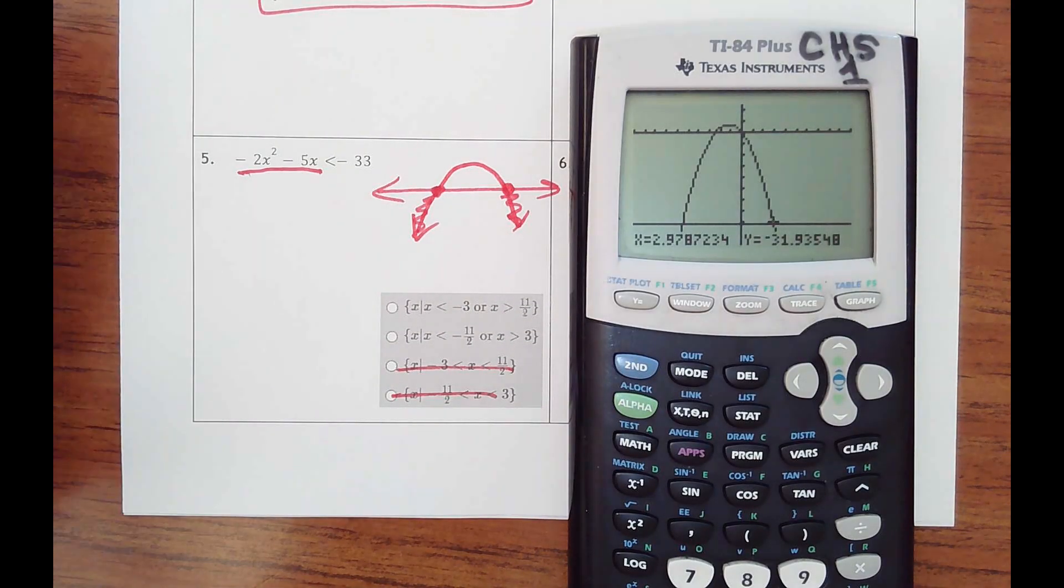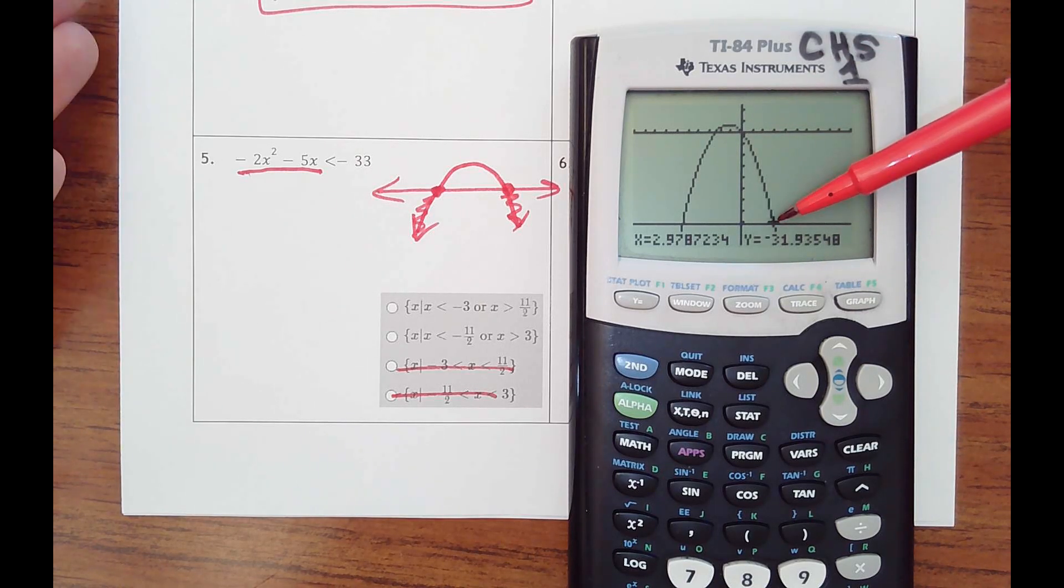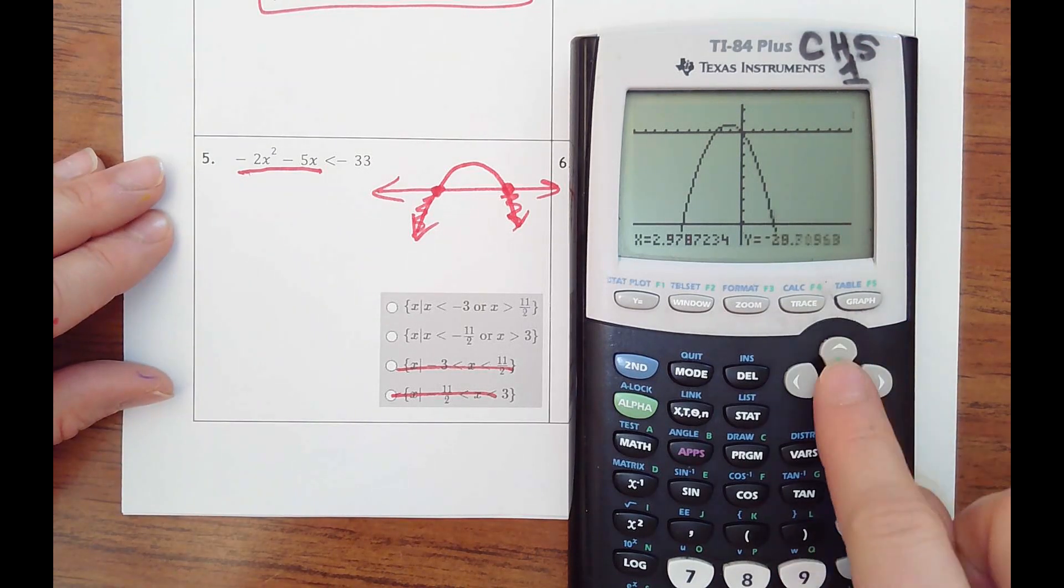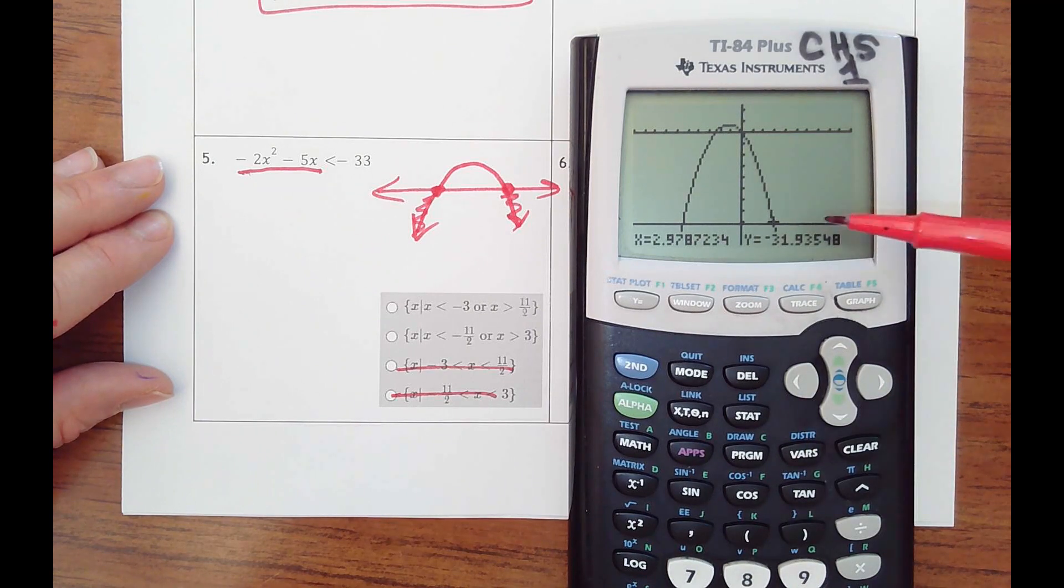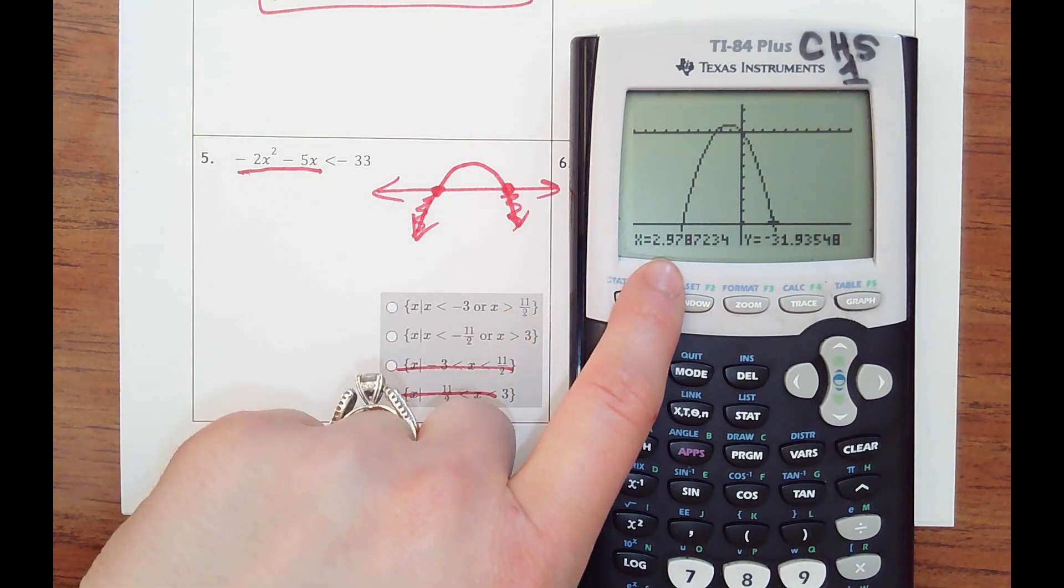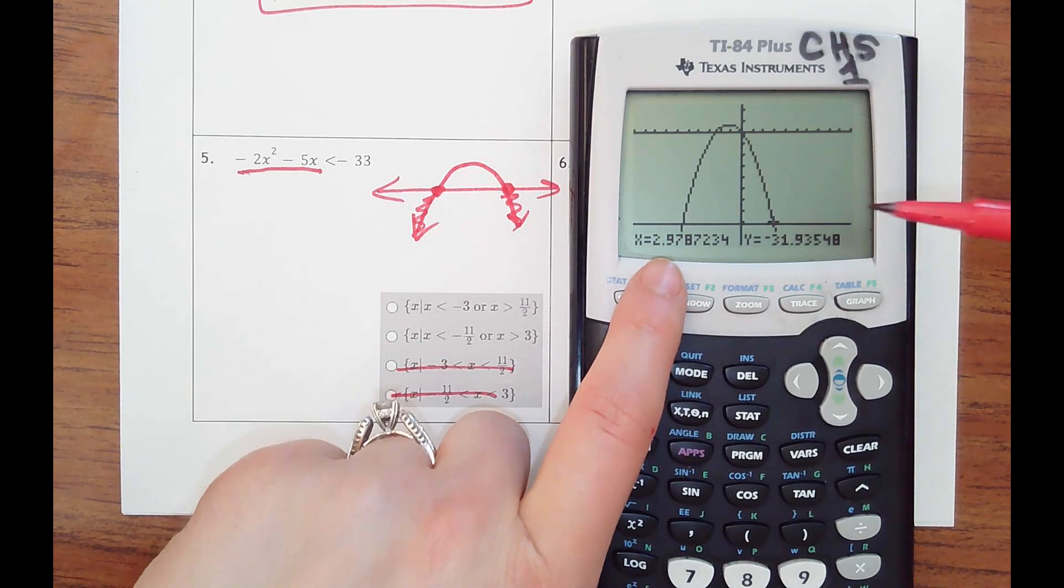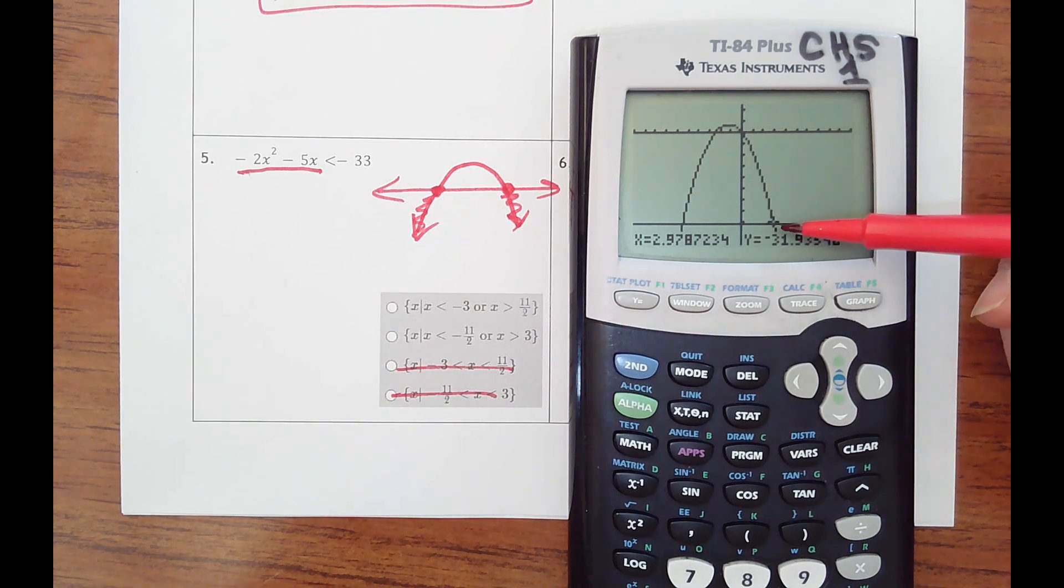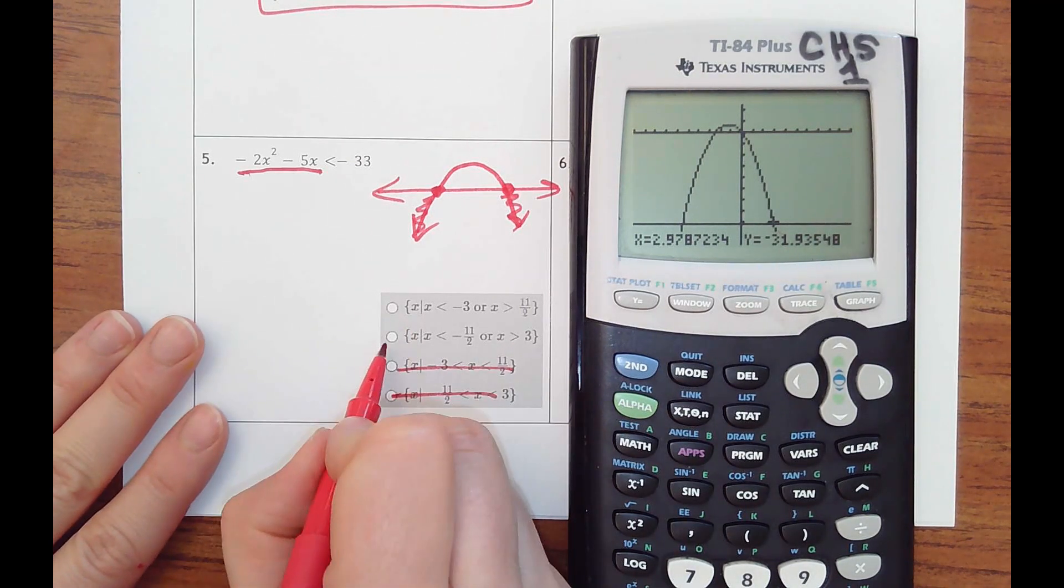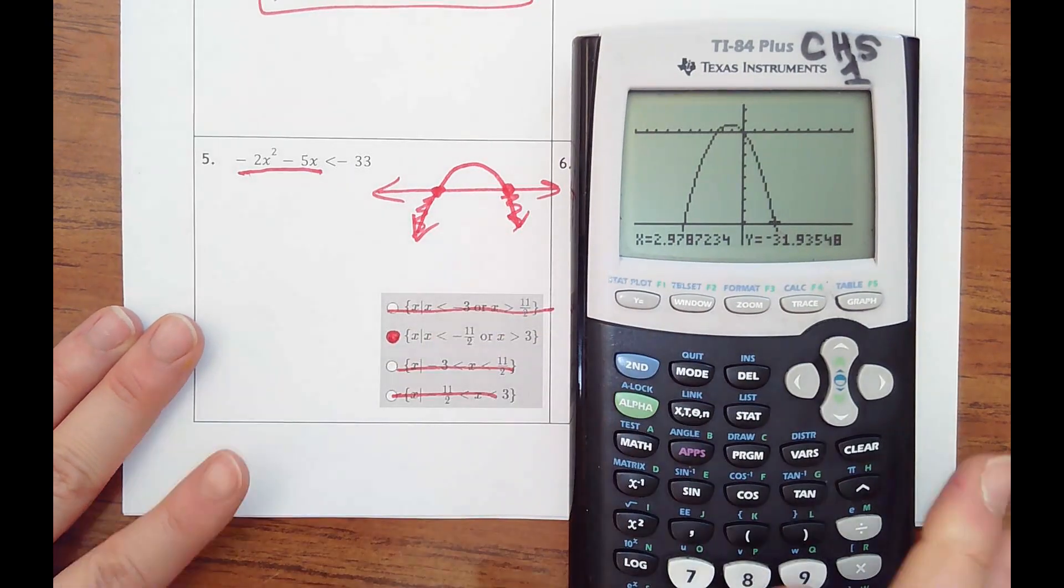And the good thing is, since this is multiple choice, I could graph them both and just see where that's at. I just arrowed this thing kind of close to where this point of intersection is, and I'm like 2.97, that's basically three. So it would be x values greater than three. It'd be this one. So that can speed you up too.